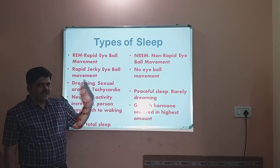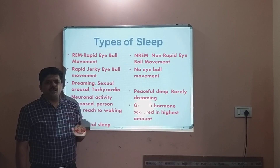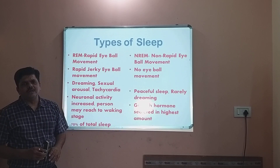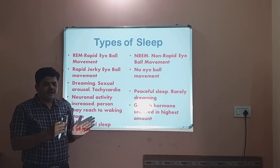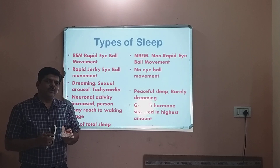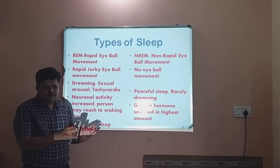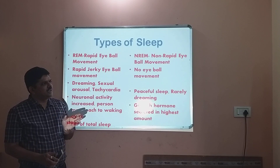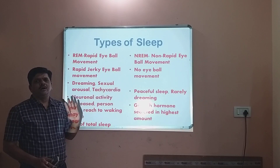Dreaming mainly occurs in the REM part. During NREM sleep, growth hormone secretion is also increased. Natural sleep has two parts — REM and NREM — and during natural sleep, the mind alternates between REM and NREM. During the whole natural sleep, the mind is transferring from one sleep stage to another.